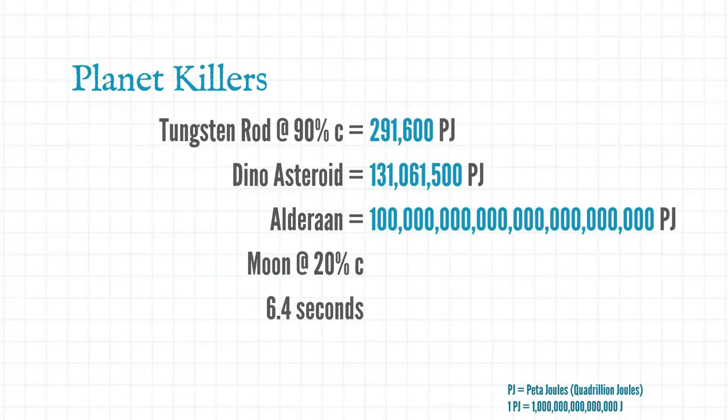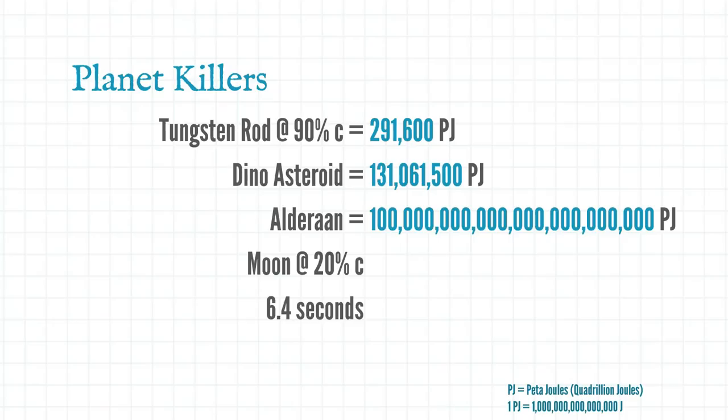So there we go. Relativistic kill missiles are a scary and dangerous weapon. But it's good to know that the planet's probably not going to get obliterated anytime soon.